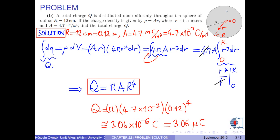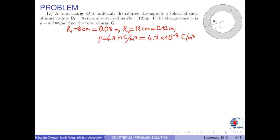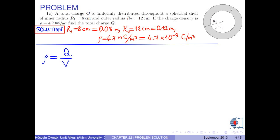Now let's solve part C. A total charge Q is uniformly distributed throughout a spherical shell of inner radius r1 equal to 8 cm and outer radius r2 equal to 12 cm. If the charge density rho is 4.7 mC per m³, find the total charge Q. Since the charge is uniformly distributed throughout the spherical shell, we have the volume charge density as total charge over the total volume of the spherical shell.